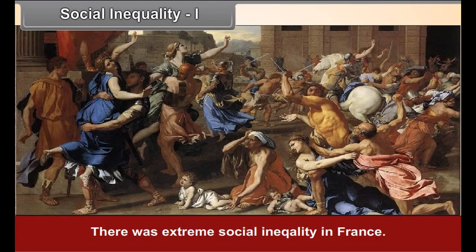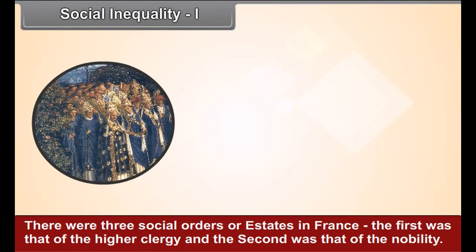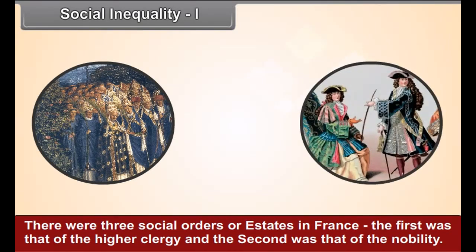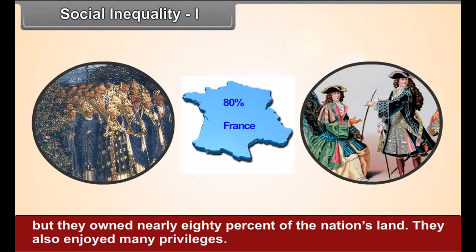Social inequality. There was extreme social inequality in France. There were three social orders or estates. The first was that of the higher clergy and the second was that of the nobility. The two together were negligible in number considering the total population of France, but they owned nearly 80% of the nation's land. They also enjoyed many privileges and lived luxuriously.